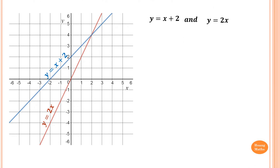Please stop the video and try this one yourself. The point of intersection is here. The x value is 2, so x = 2. Looking across this line, y = 4. So the answer is x = 2 and y = 4.